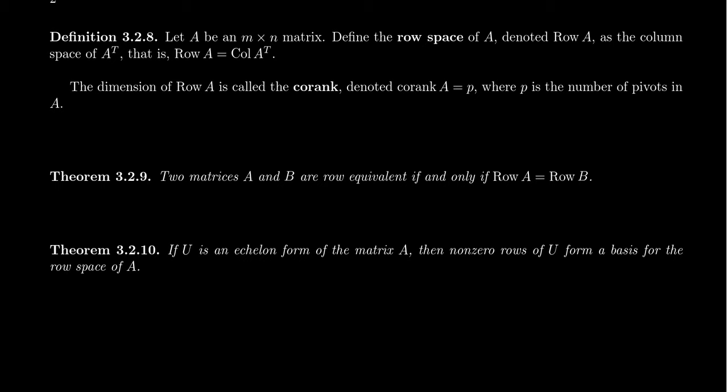How do we actually compute a basis for the row space? When we introduced the column space and null space, we saw there are ways of computing bases for those spaces. One approach is to use the fact that the row space equals the column space of A transpose: compute A transpose, row reduce it, and the pivot columns of A transpose give a basis for the column space of A transpose. Then turn those back into rows and you get a basis for the row space. That's perfectly acceptable.